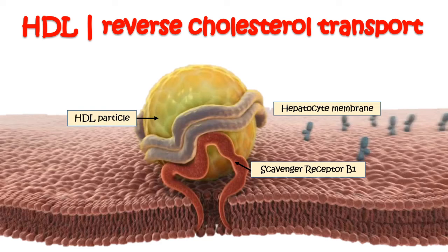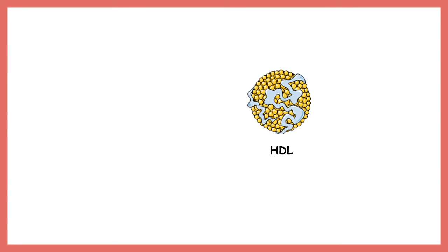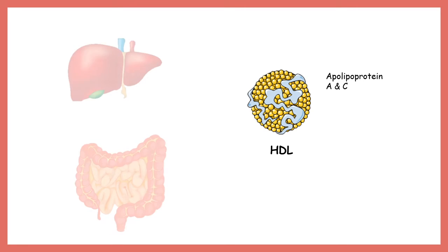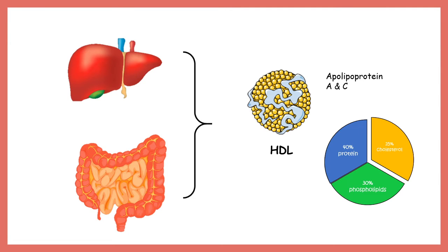In this video we'll talk about HDL and reverse cholesterol transport mediated by HDL. HDL stands for high density lipoprotein, meaning HDL has more of a protein part than the lipid part. HDL has apolipoprotein A1 and apolipoprotein C as major components, and can be secreted from both the intestine and the liver. 40% of HDL is protein, 30% is phospholipid, and 25% is cholesterol.